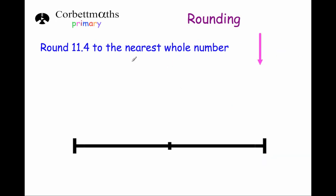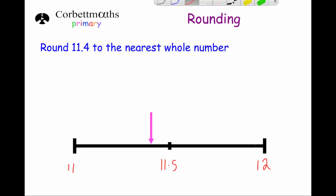Our next question asks us to round 11.4 to the nearest whole number. The whole number below 11.4 is 11 and above is 12, and midway between those two numbers is 11.5. If we put 11.4 on the number line it would be below 11.5, so 11.4 is closer to 11 than it is to 12. Our answer is 11.